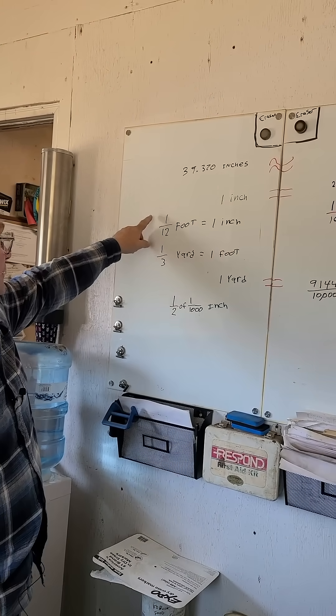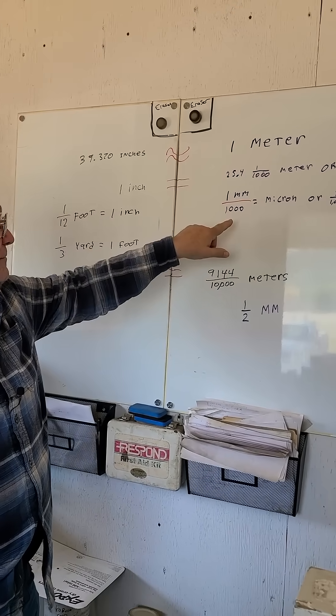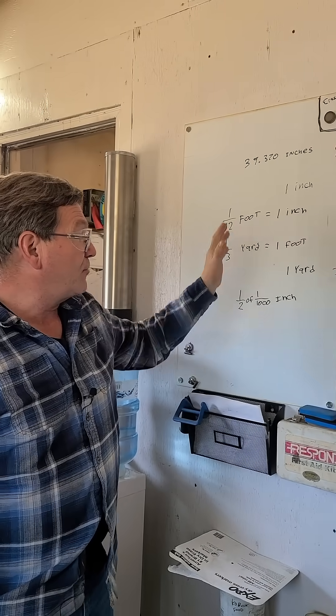They're all ratios. One twelfth of a foot is one inch. A third of a yard is one foot. One millimeter divided by a thousand is a micron. You've got all these ratios here. They're all rational.